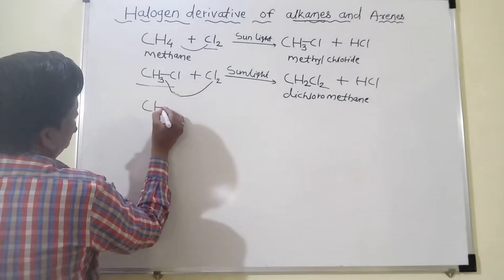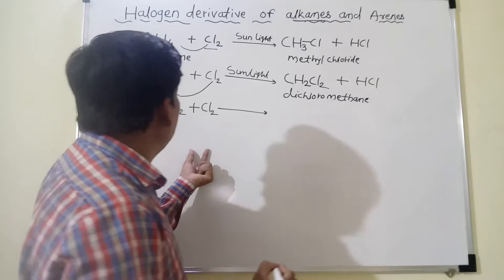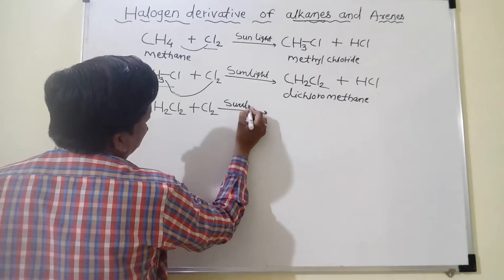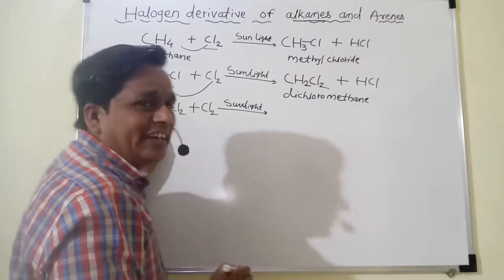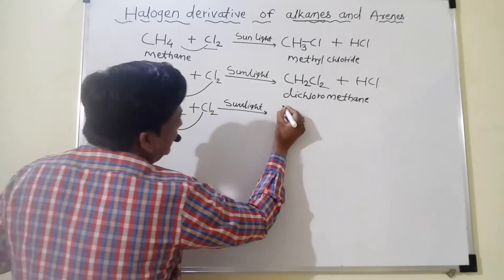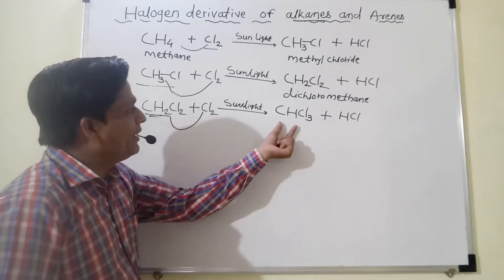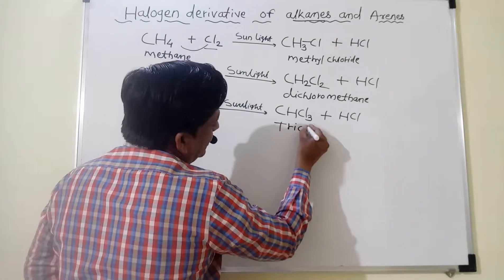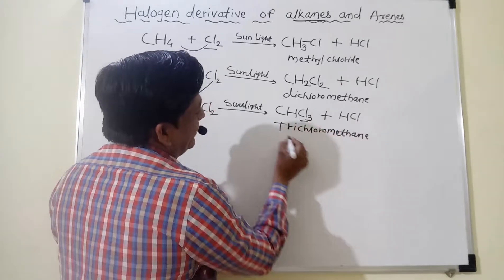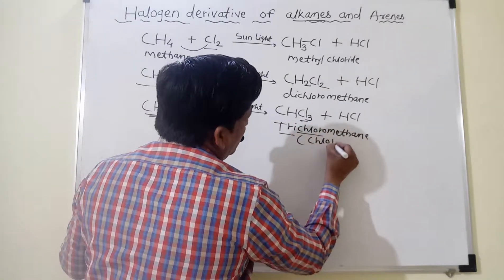Again, this dichloromethane reacts with Cl2. This reaction can be carried out as long as hydrogen atoms remain. Again, in presence of Cl2 and sunlight, there are two hydrogen atoms. One hydrogen atom is replaced by chlorine, and we get CHCl3, with HCl as byproduct. This trichloromethane is nothing but chloroform. Why is it called trichloromethane? Because tri means three, and there are three chlorine atoms.